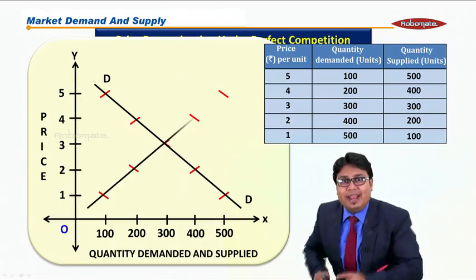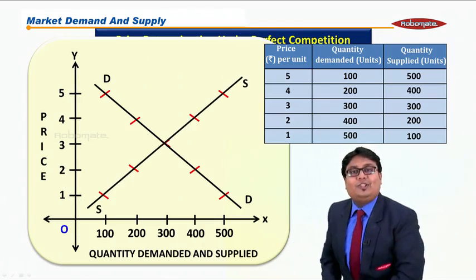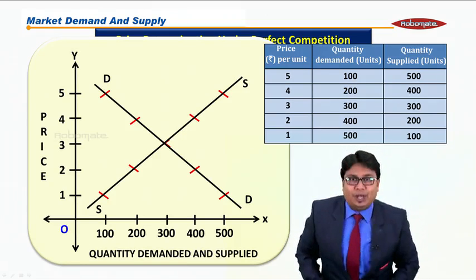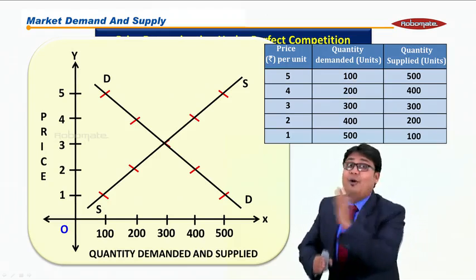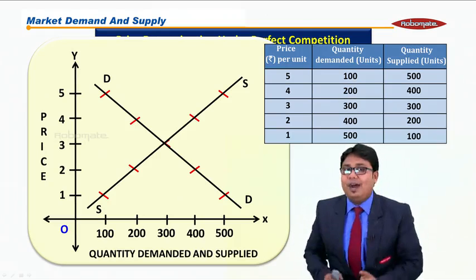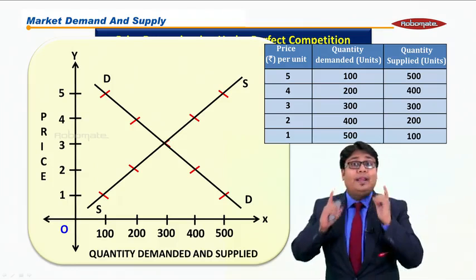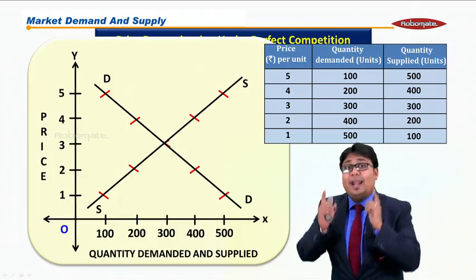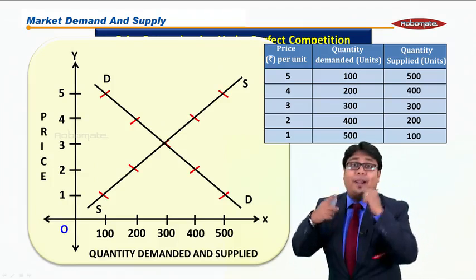It will be an upward sloping supply curve. Why? Because the relationship between price and quantity supplied is direct, not inverse. Direct relationship has to be upward sloping.